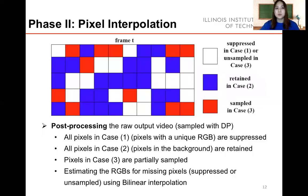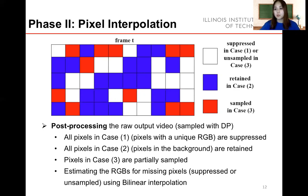After the sampling phase, we have three kinds of pixels and need to do post-processing for the entire video. All pixels in case 1 are suppressed, pixels in case 2 are retained, and pixels in case 3 are partially sampled. We have to fill the missing pixels from cases 1 and 3. We use bilinear pixel interpolation, which takes the average RGB of neighboring pixels to reconstruct the video. We skip pixels without neighboring pixels and always start from pixels that have neighboring pixels, until all pixels are reconstructed.